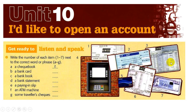First, the checkbook — we all know it. Checkbook is number 2. A bank card — most of us have a Visa card — is number 5. A bank book is number 3. If you know it, great; if not, see it and say hello to it. A bank statement is number 6. Paying-in slip is number 1. An ATM machine — this we know — is number 4.